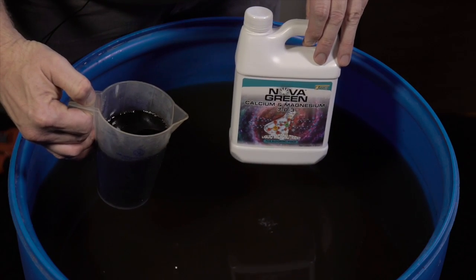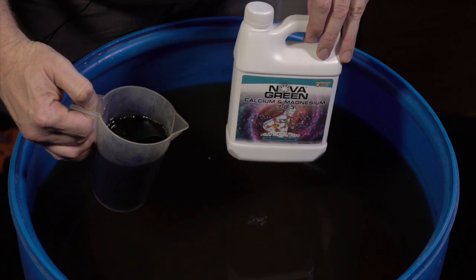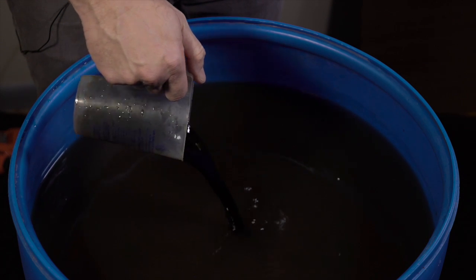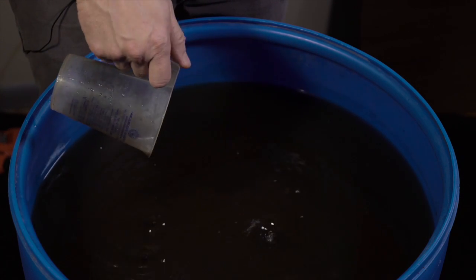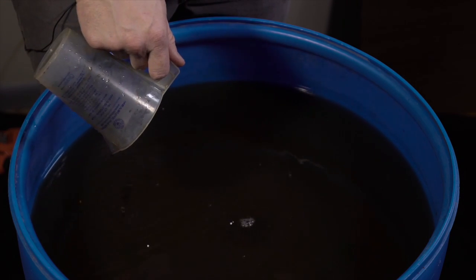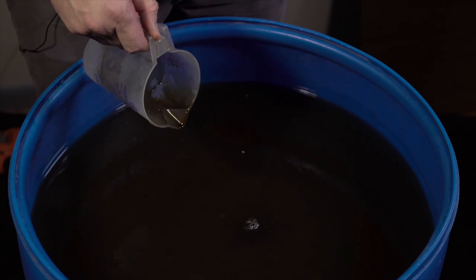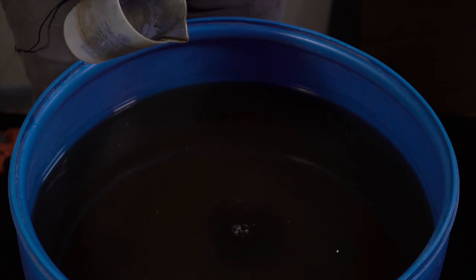Our next mix coming in is going to be our calcium magnesium. This also has 7% nitrate nitrogen in it. And then the ratio of your calcium magnesium is a two to one. So you've got 4% calcium and 2% magnesium.